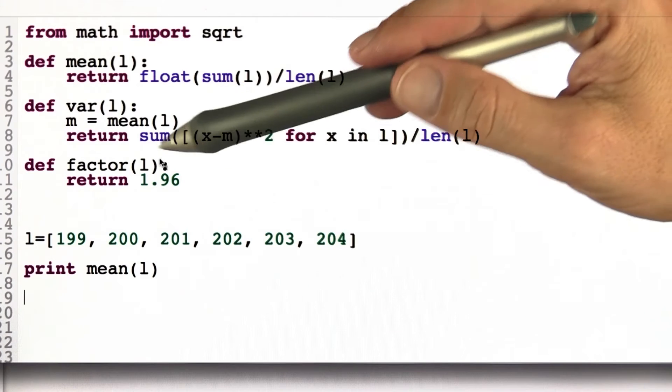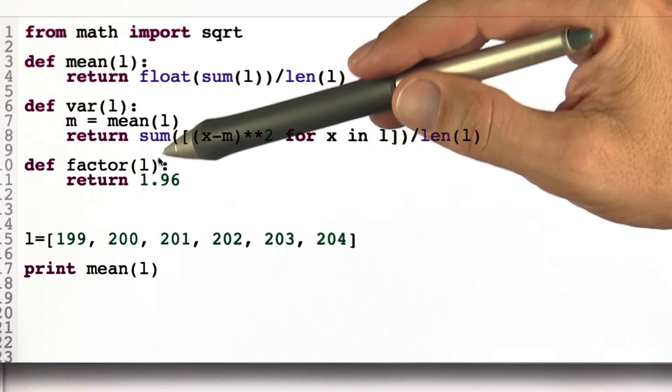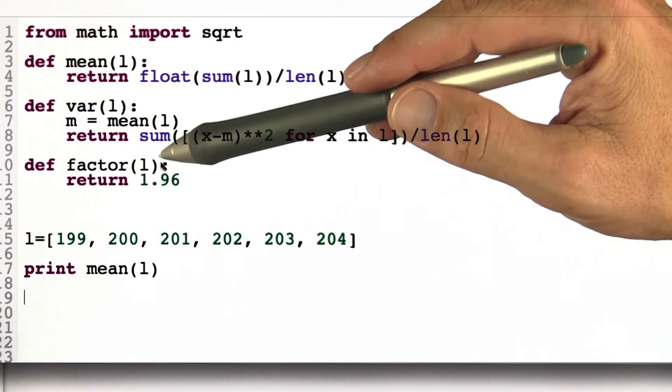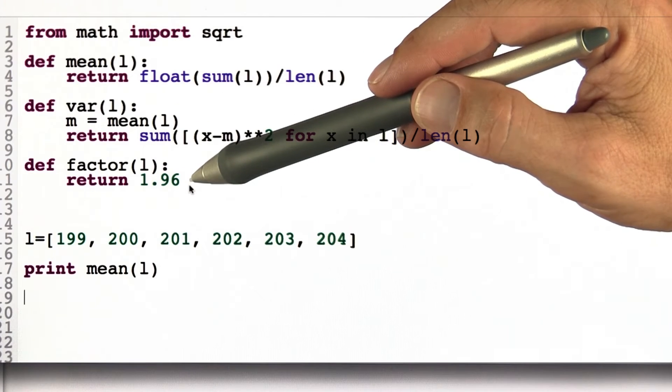And then I also should really implement the t-table, but I was lazy, so I just gave you 1.96, even though we know that's not quite correct.